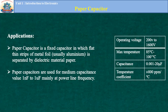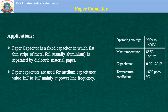Paper capacitors can be used in incoming power applications to homes or industries — three-phase AC power lines. The temperature coefficient is ±800 ppm per degree Celsius. Paper capacitors are fixed capacitors in which flat thin strips of metal foil are separated by a paper dielectric. They are used for medium capacitance values of 1 to 2 µF, mainly at power frequencies.